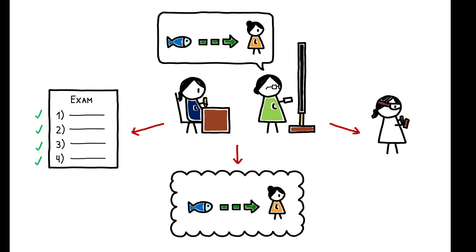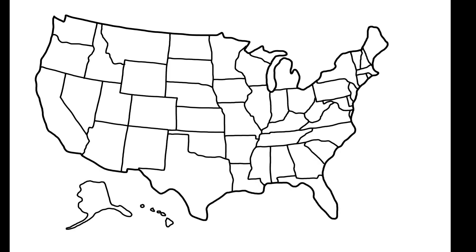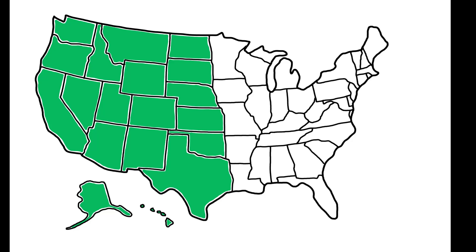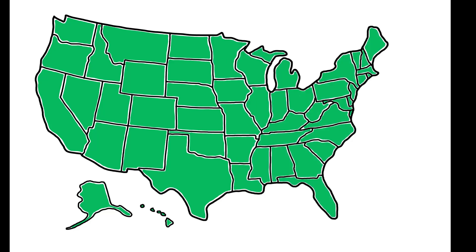A naive, linear extrapolation of the estimated effects suggests that if all states were to adopt science standards with an evolution score of 1, evolution belief in the U.S. population would increase by 20% of the sample mean, and the number of adults working in the life sciences would increase by 8%.